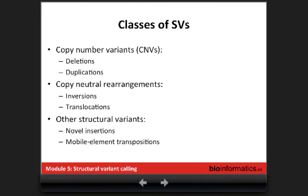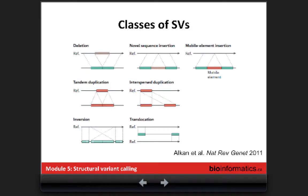The different classes of SVs are: copy number variations — large deletions and duplications — and copy-neutral rearrangements such as inversions and translocations, as well as other types of structural variance like novel insertions and transposition of mobile elements. When we talk about structural variants, we always talk about what's happening in the sample when we compare it to the reference.